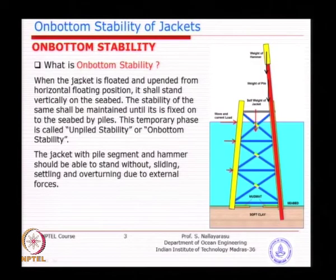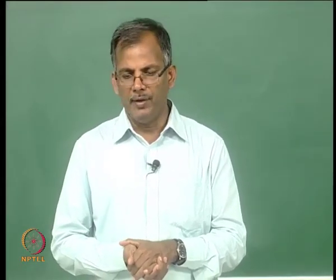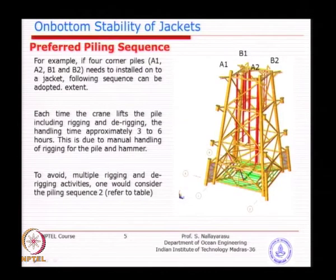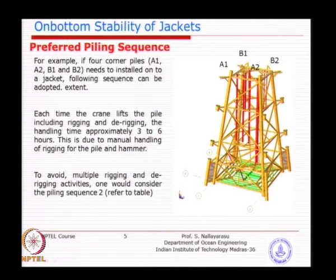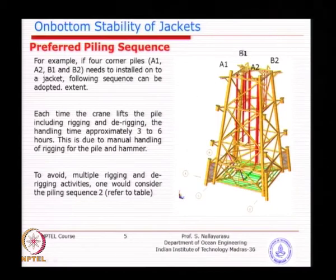Once the main piles are driven, the jacket becomes well secured to the ground, and then the skirt piles can be driven safely. The most critical phase is the first four main piles. For example, if the center of gravity of the jacket is towards one corner, it will try to tilt in that direction. We need to identify which piling sequence — which corner to start at — is most critical for stability.